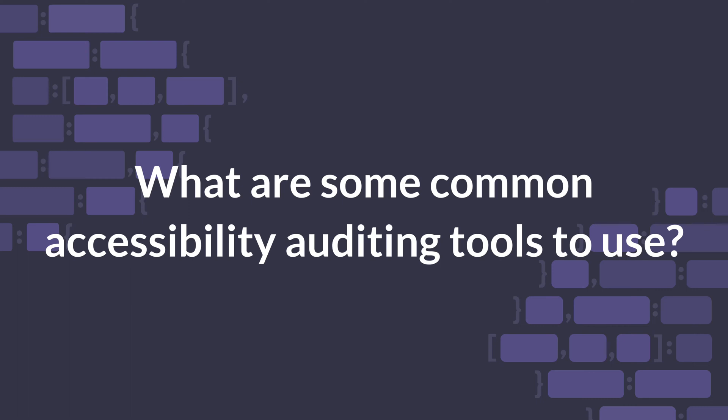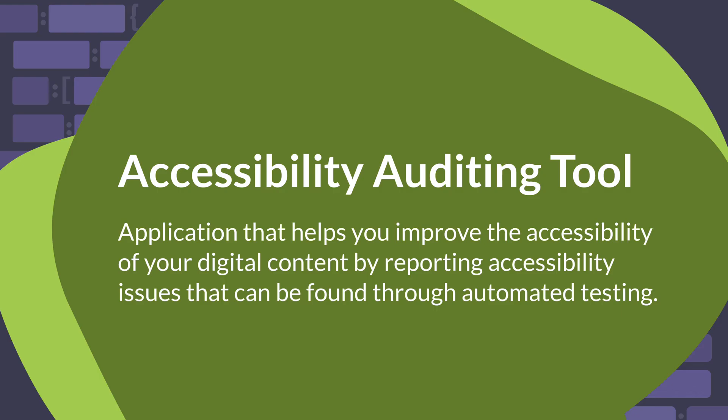What are some common accessibility auditing tools to use? Accessibility is a crucial, yet often overlooked aspect of digital content. When making your digital content accessible, it's important to ensure it meets accessibility standards. An accessibility auditing tool is an application that helps you improve the accessibility of your digital content by reporting accessibility issues that can be easily found through automated testing. This content includes websites, web applications, and mobile apps.